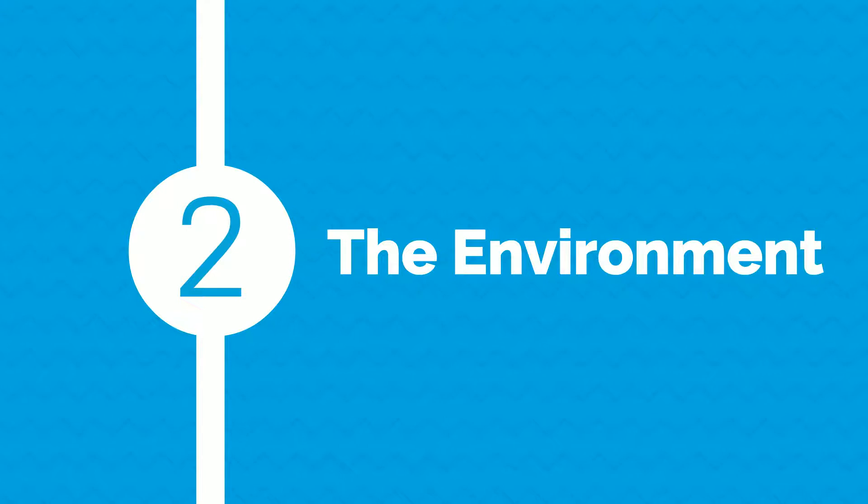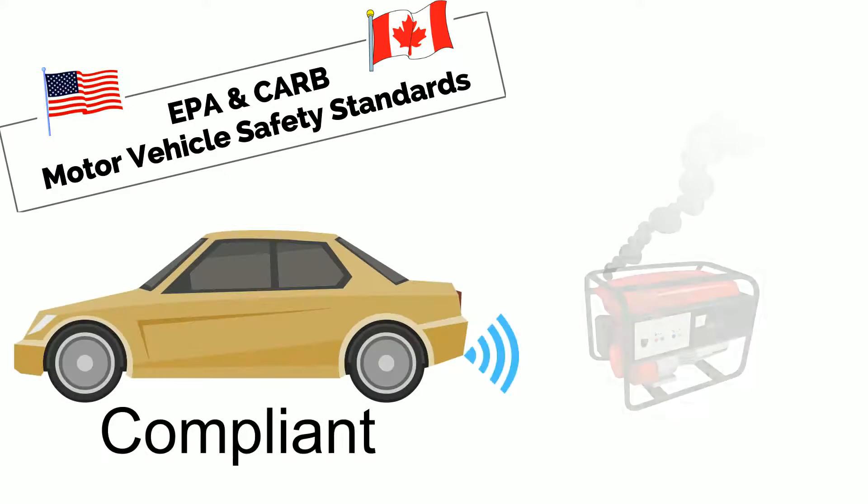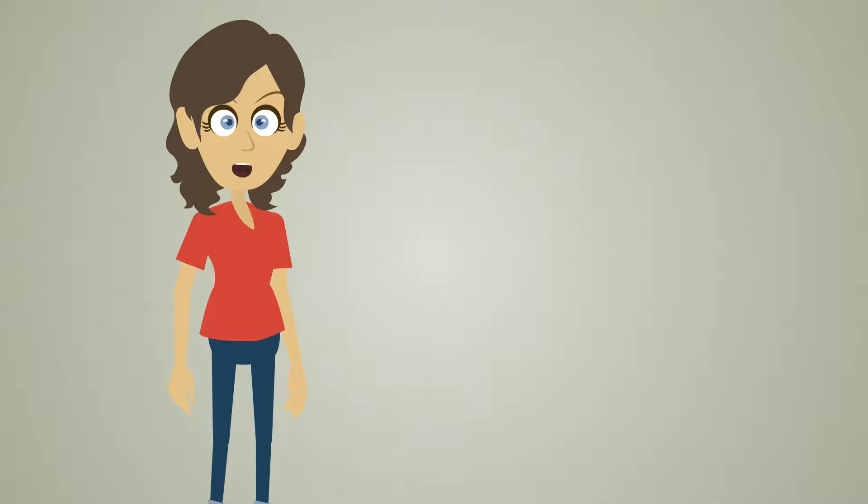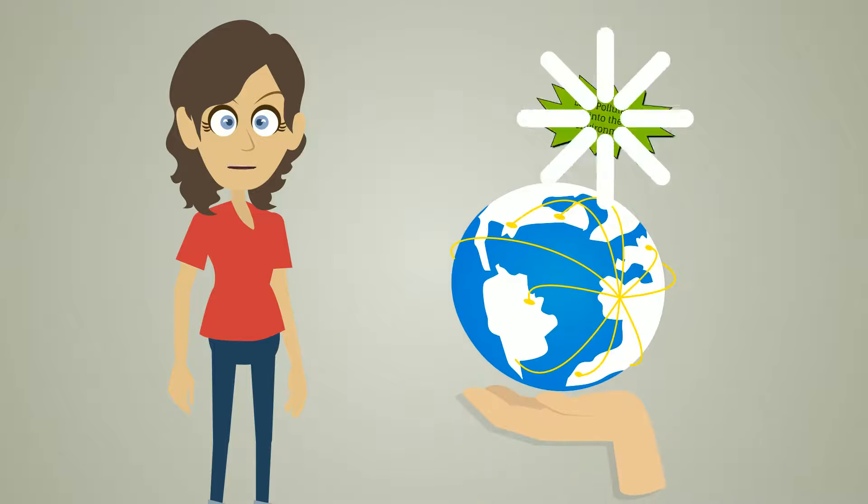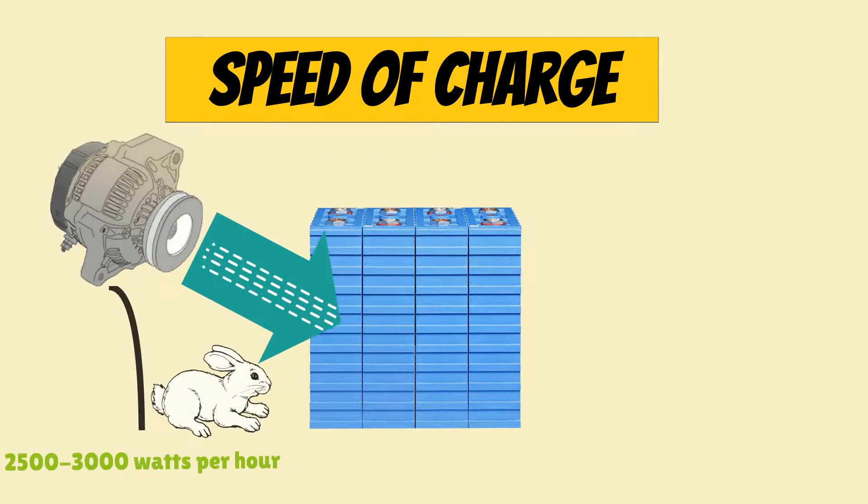Advantage number two, the environment. The standards of emission for vehicles are much more stringent than those of a gas or propane generator. So when you're running your GU, you're putting a lot less pollutants into the environment. Not to mention that you don't have to run your vehicle for as long to top up your batteries as you do with your gas or propane generator.